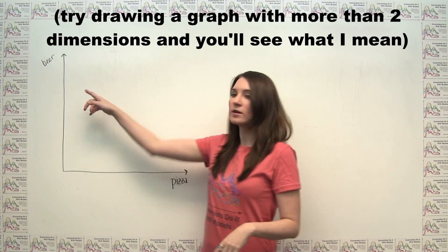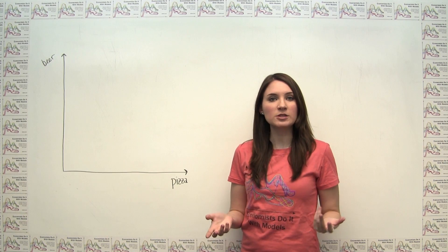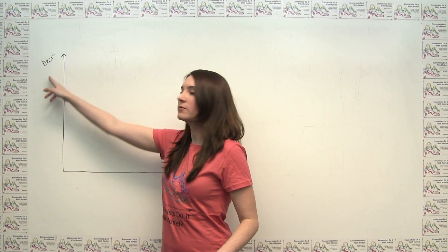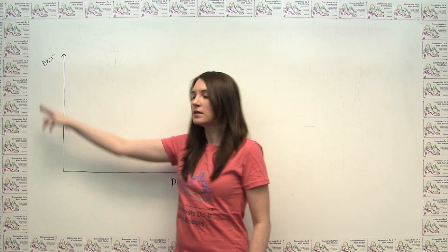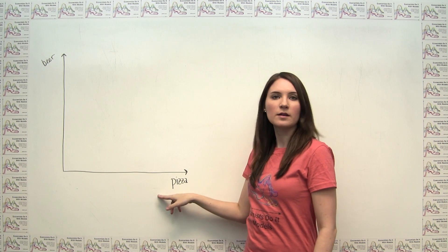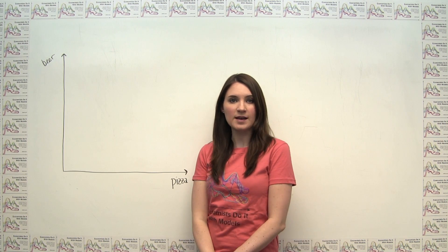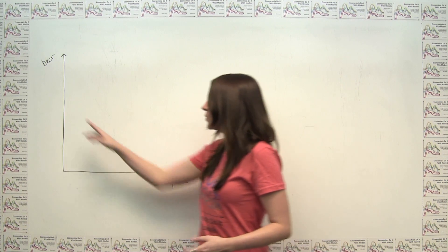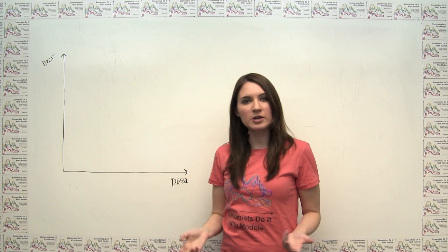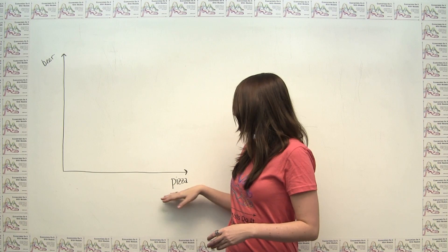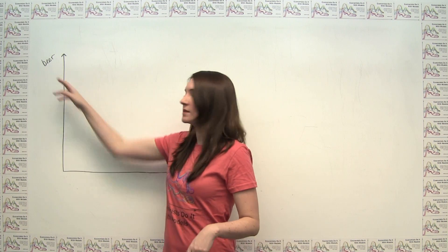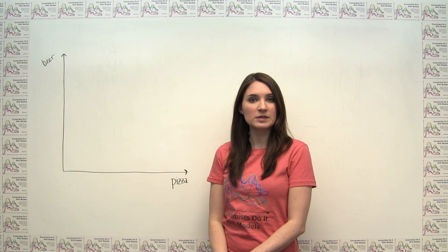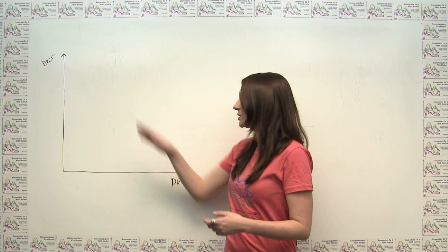In this example, we'll use beer and pizza as the two goods in question. Quantity of beer is on the vertical axis or the y-axis, and quantity of pizza is on the horizontal axis or the x-axis. It doesn't really matter which good we put where, because this is sort of an arbitrary decision, but it is important that we keep these consistent throughout our utility maximization analysis and we don't switch them without thinking.